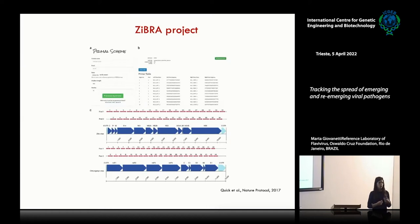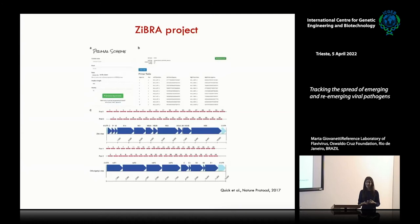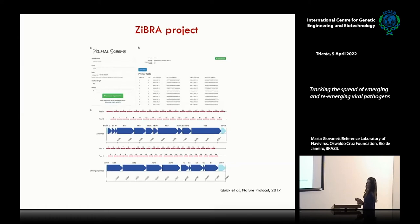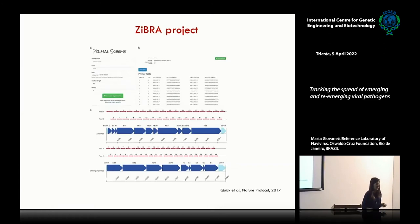In the same time, we also developed an online tool called the Primal Scheme. The Primal Scheme is able to generate for us a multiplex primer scheme for the pathogen we are looking for. The only input we need to provide is a FASTA file containing at least five consensus sequences from the virus we are looking for, and it is able to generate this multiplex tiling primer scheme. The primer scheme is composed of two different pools to prevent primer dimerization and excess overlapping primers. Nowadays, we are also trying to implement a multiplex primer scheme that can produce ultra-long reads, around 2 kb, for example.